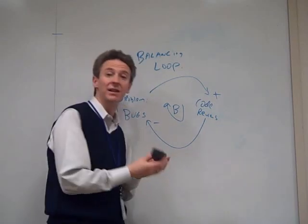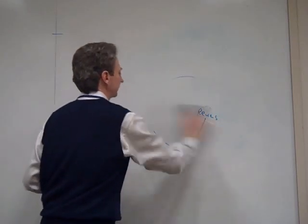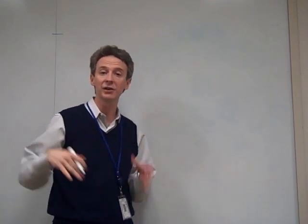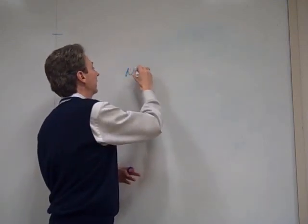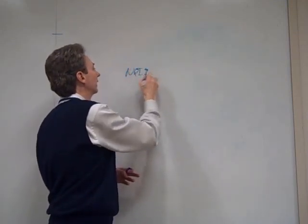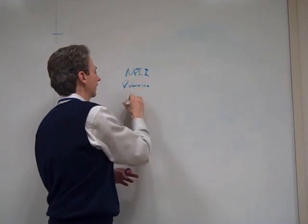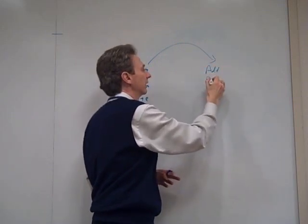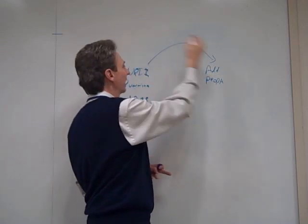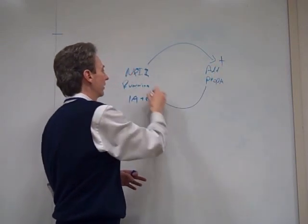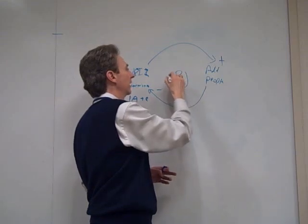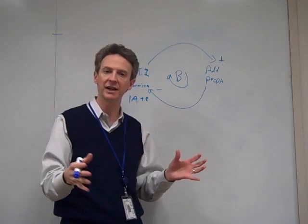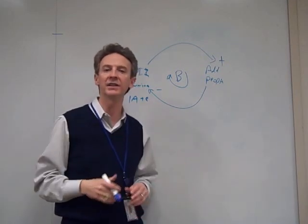Now let me get back to fixes that fail with a few examples. Example number one: an NPI program is running late, so you add people. NPI running late causes you to add people, and adding people — at least you hope — causes the NPI to not run so late anymore. This may be true for certain functions, tasks, or activities where adding people has no unintended consequences.